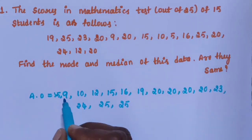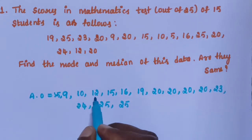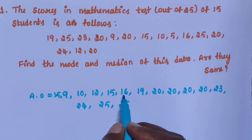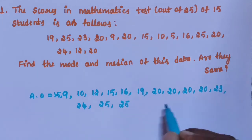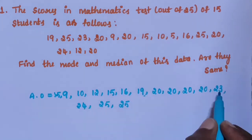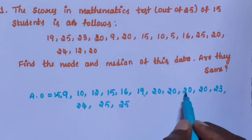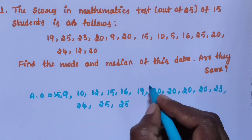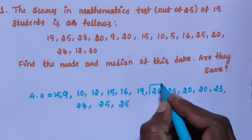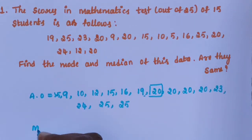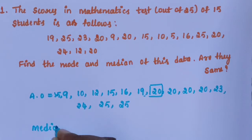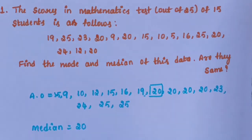Then find the middle value. Counting from both sides: 1, 2, 3, 4, 5, 6, 7 from the left and 1, 2, 3, 4, 5, 6, 7 from the right. The middle value is 20. So median is equal to 20.